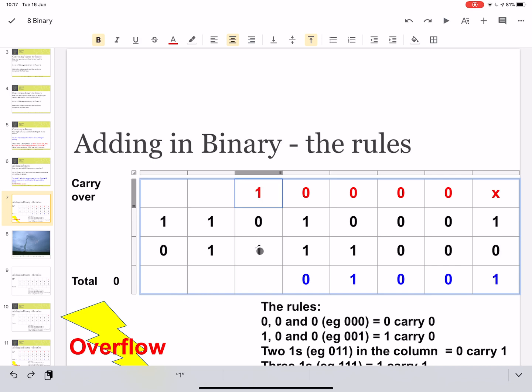This column, much the same. Look, we've got 2 1s and a 0. There you go, there's the rule, 2 1s and a 0. So again, 0, carry 1.